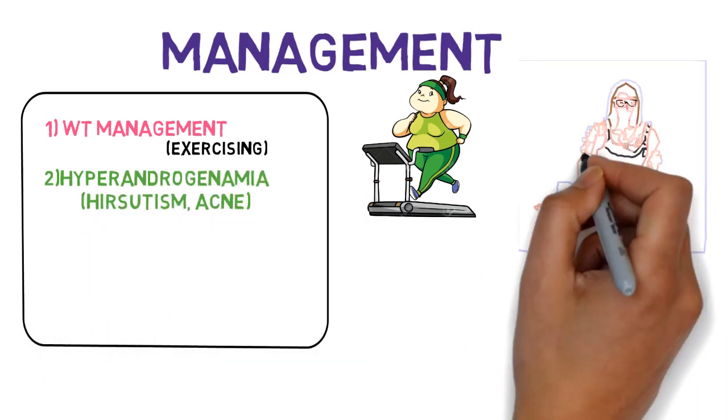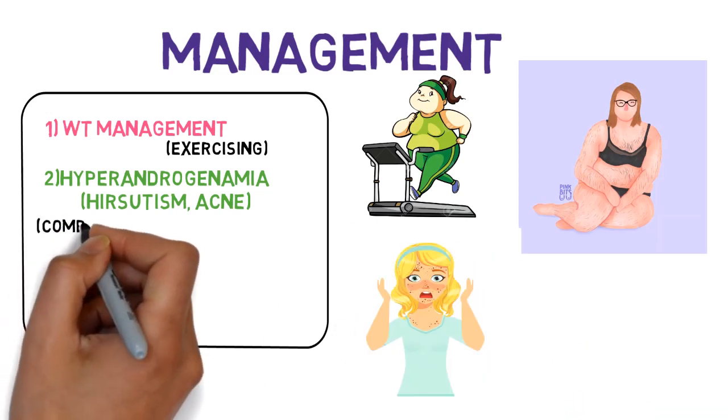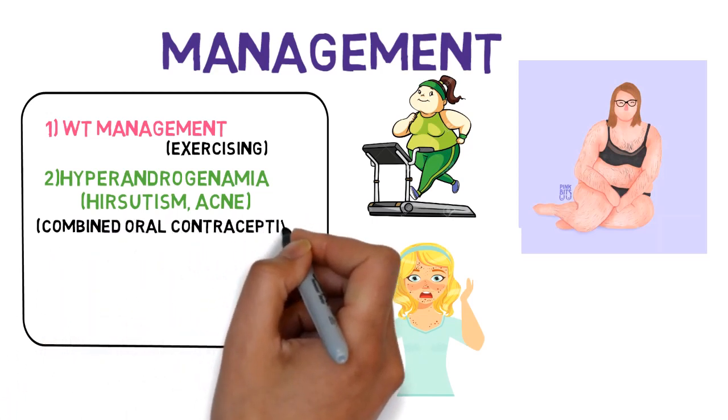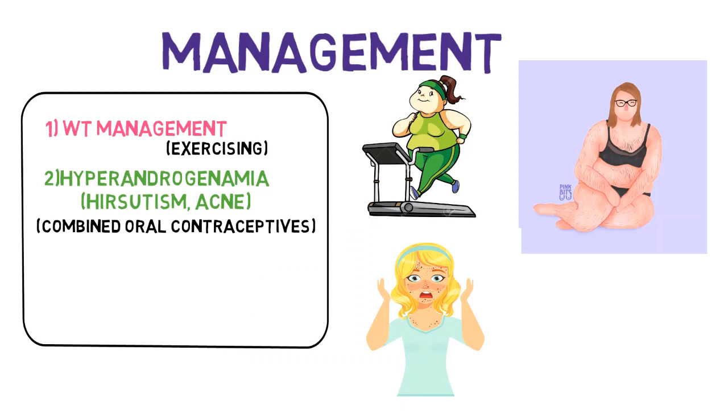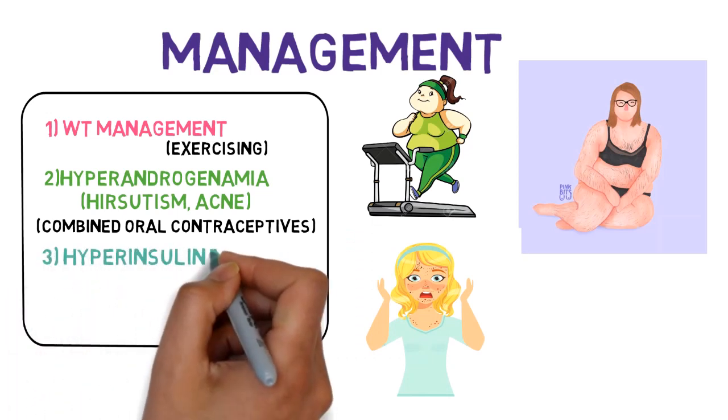Hyperandrogenemia, which results in hirsutism and acne, can be maintained by giving a combined oral contraceptive. This suppresses the LH and estrogen, improves the SHBG, causing a decrease in the hirsutism and acne.